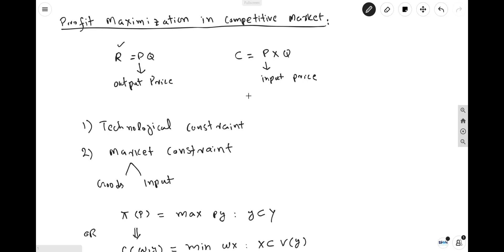Now, how are the prices of output and the prices of inputs determined in a competitive market? In competitive markets, they cannot be unilaterally determined by the producers or the consumers. Rather, they are determined by the interaction of producers and consumers bargaining, which is also known as the demand and supply forces. Because of technological constraints and market constraints, producers cannot determine these prices unilaterally.